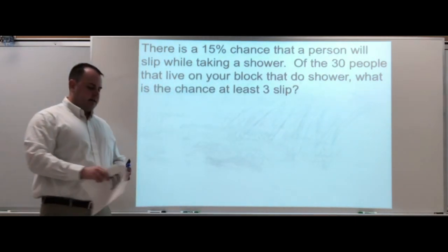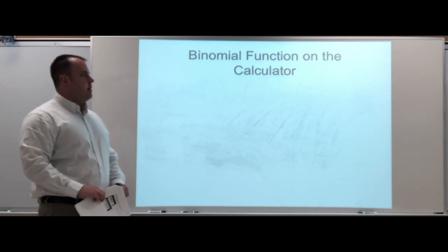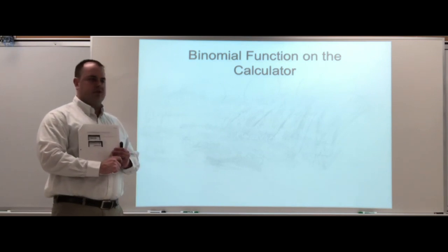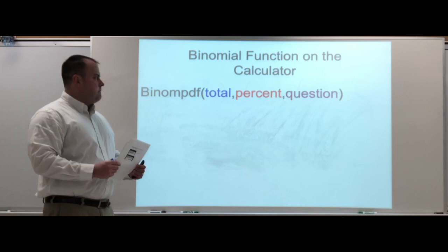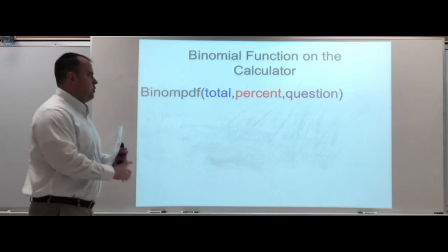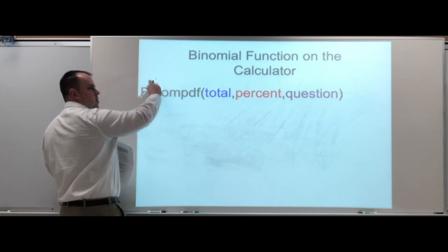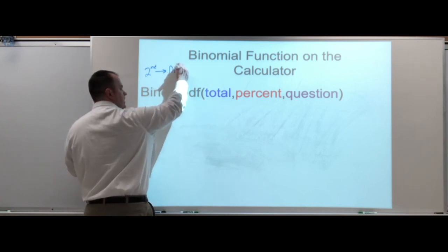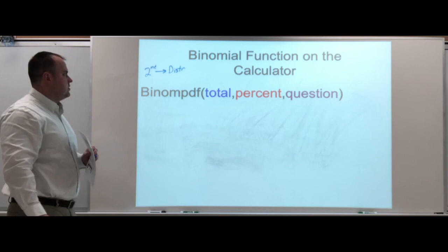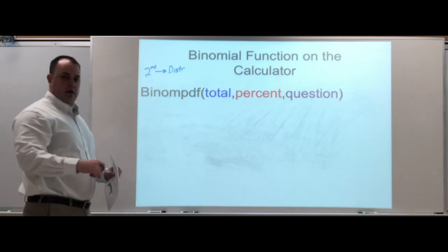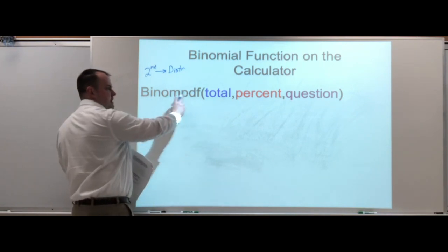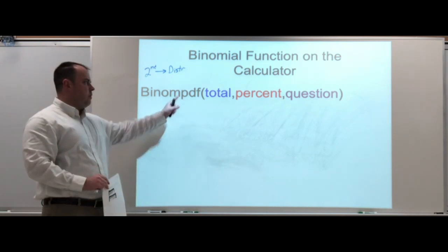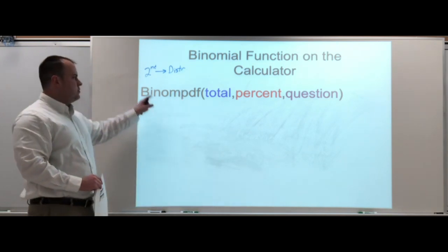Now we're going to look at the calculator function, the binomial pdf. That should be if you hit second distribution or second DISTR. You're going to have to scroll down a little bit, and it's binomial pdf. Be careful, there's a cdf and a pdf. We'll talk more about what the pdf and cdf represent later.